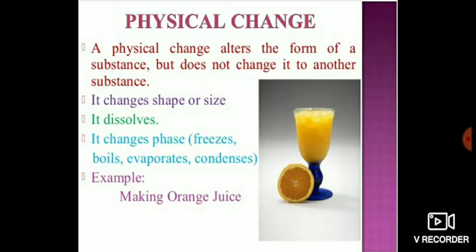Physical change is a change that occurs only in the physical properties of any substance. That means it alters the form of a substance, but does not change it to another substance. The changes which occur in physical properties are change in shape, or size, or change in state.